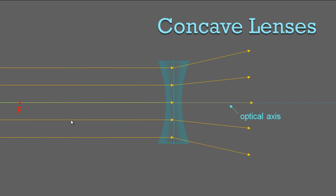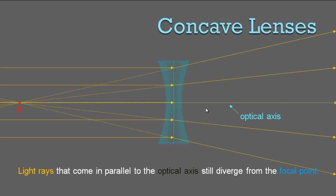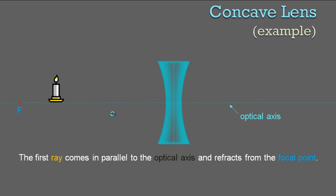So light is diverging. Instead of drawing the extra thickness, once it hits this center line — the center of the lens — it refracts outwards. If we're just using a line, the light rays that come in parallel to the optical axis still diverge from the focal point. Nothing changed; it just makes our drawings a little easier.